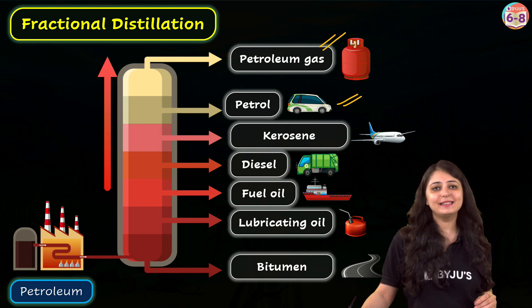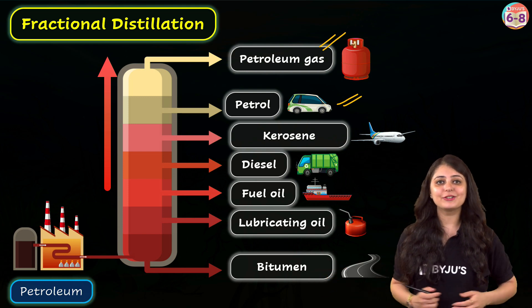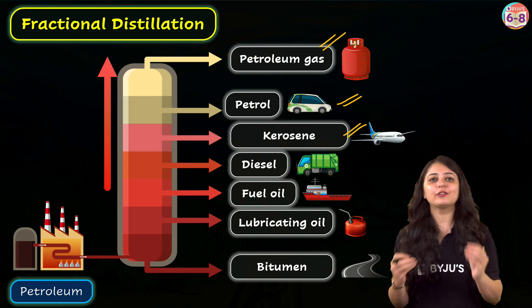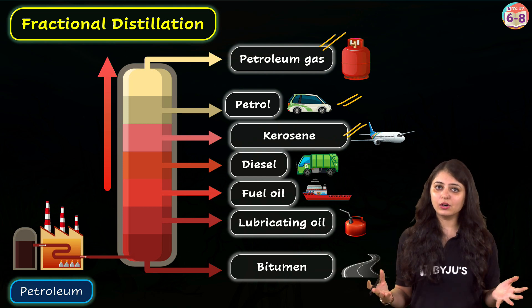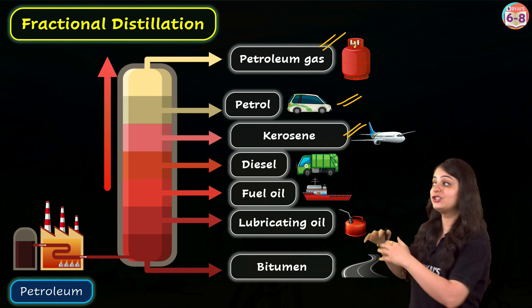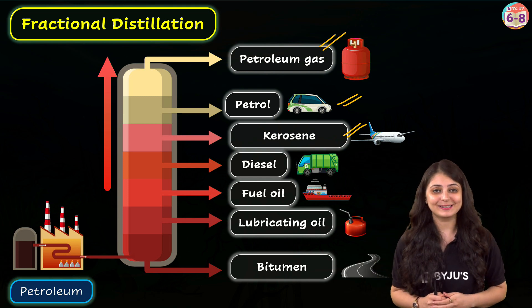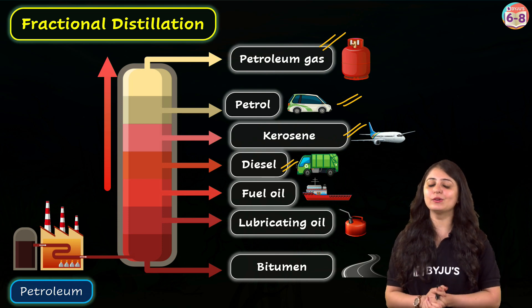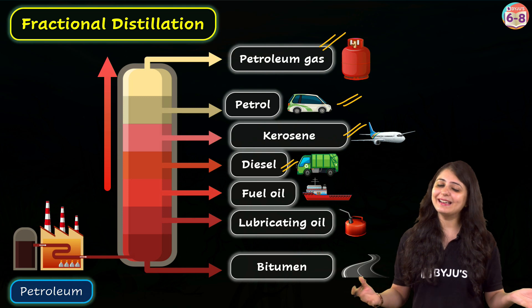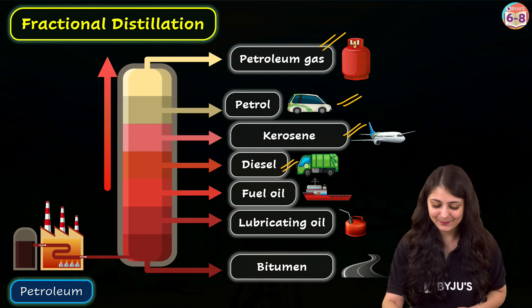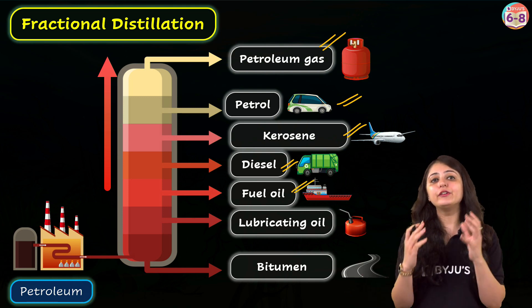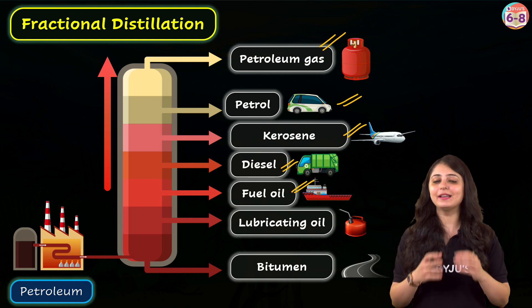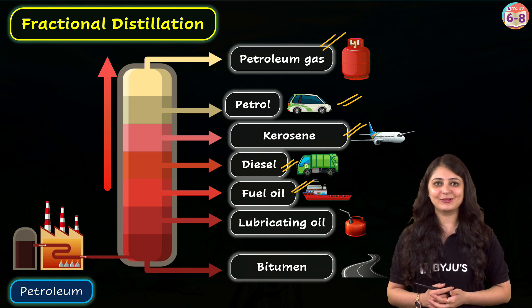Next we have petrol, which is used as a motor fuel for light vehicles and also as a solvent for dry cleaning. Moving on, kerosene is used as a fuel for stoves and lamps, and also as jet fuel for aircraft. Next is diesel, used as a fuel for heavy motor vehicles such as trucks and for electric generators. Fuel oil is used as an energy-generating fuel in industries and for power units.